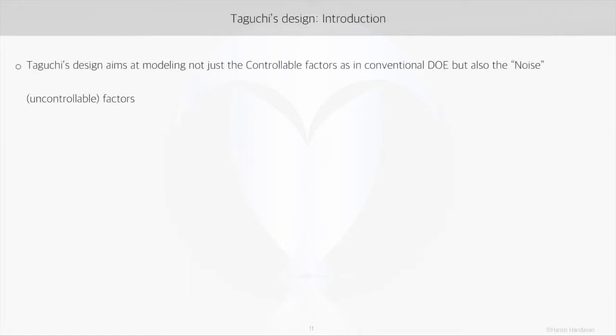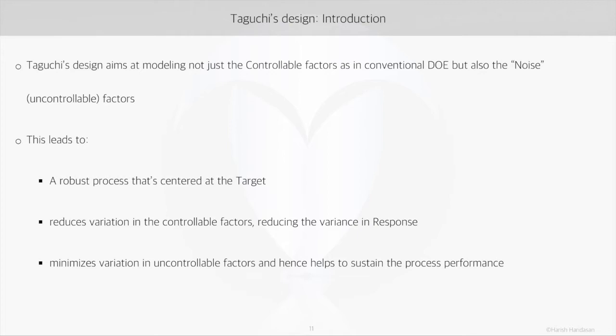In conventional design of experiments, we model the response Y on controllable factors which we call Xs, and we block the noise factors during experiments in DOE. But in Taguchi's designs, we model the response Y on controllable factors and noise both. This is what leads to a robust process centered at the target with minimal influence of variation on the factors as well as response.